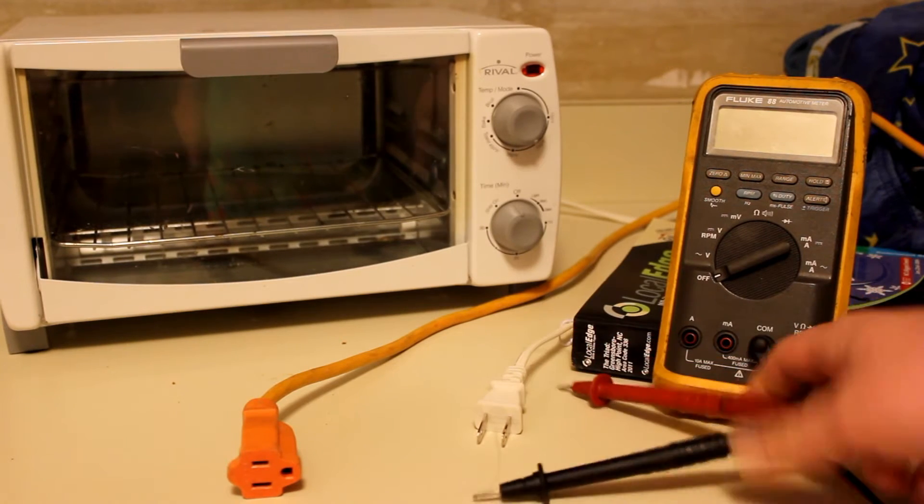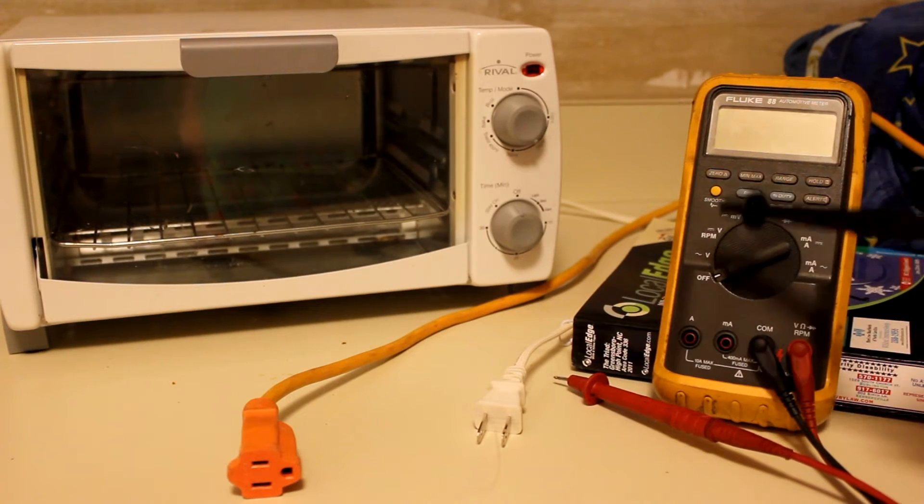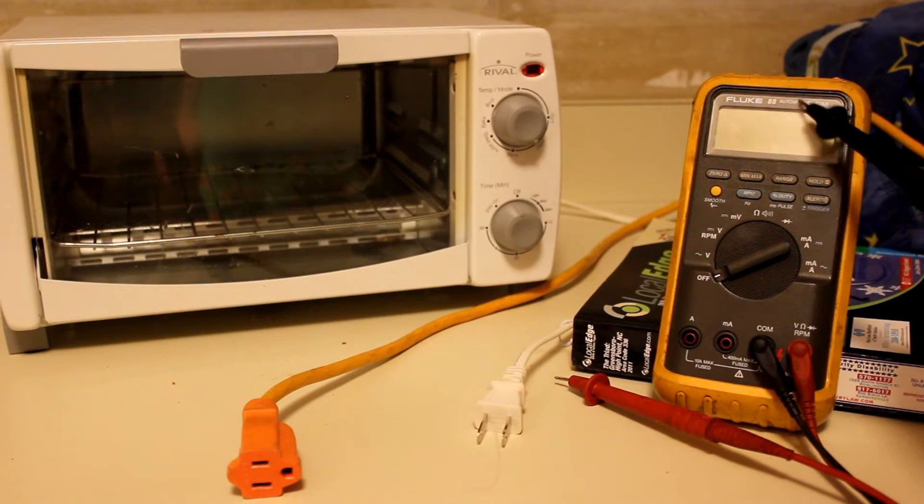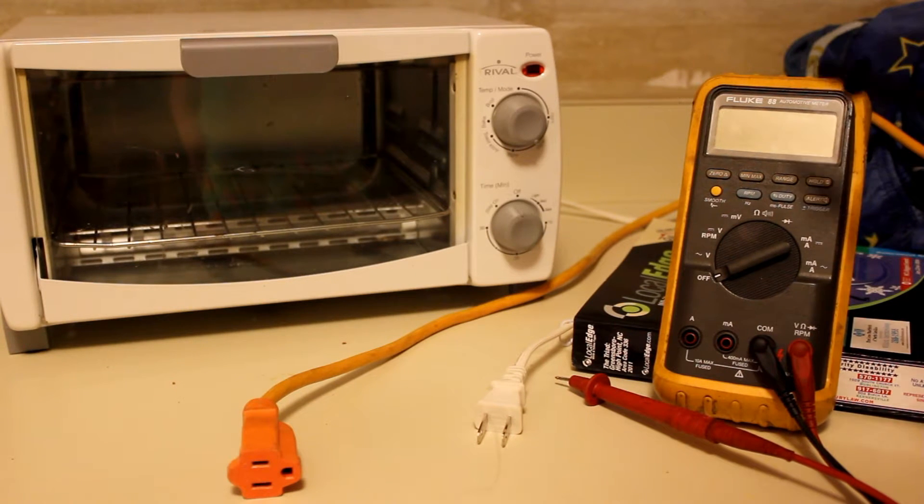So basically, the first thing we're going to go over is we're going to identify the different parts of your digital multimeter, and this is a Fluke 88 automotive meter. You don't have to get one as fancy as this.